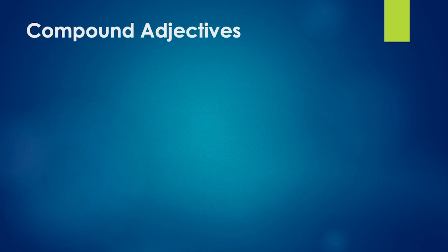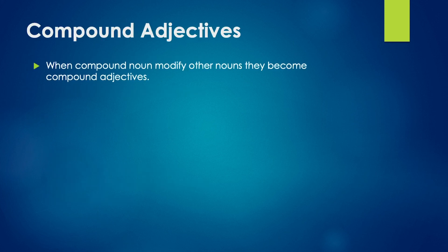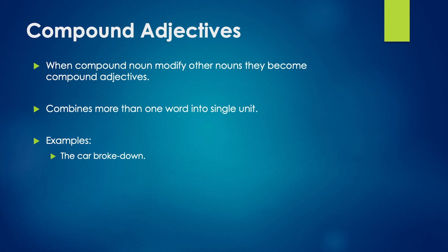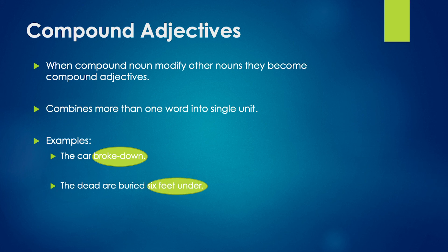Compound adjectives: when compound nouns modify other nouns, they become compound adjectives. This type of adjective usually combines more than one word into a single lexical unit and modifies a noun. They are usually separated by a hyphen or joined together by a quotation mark. For example, the car broke down — the compound adjective is broke down. The dead are buried six feet under — the compound adjective is six feet under.